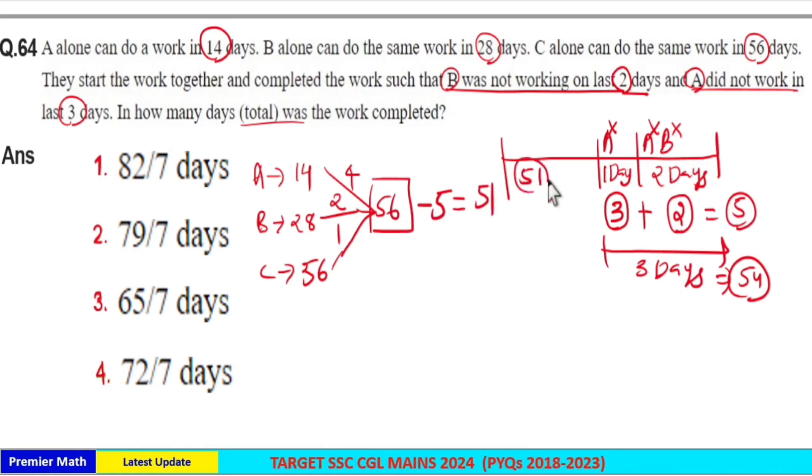So this 51 unit completed by A, B, C together. Now A, B and C together can complete 4 plus 2 plus 1, 7 units of work. So number of days taken by A, B, C to complete this 56 unit is equal to 51 by 7 plus remaining 5 units completed in 3 days.